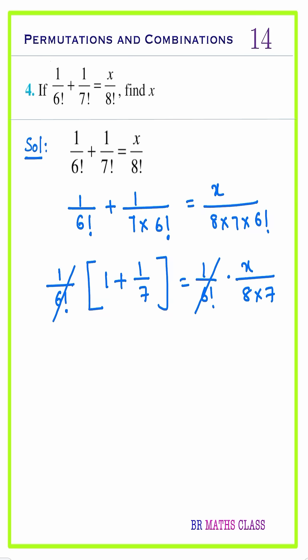Now you see this 1 by 6 factorial - 1 by 6 factorial will get cancelled. If I simplify this, what I will get: 8 by 7 equals x divided by 8 into 7. The 7, 7 will get cancelled. What is x from this? 8, 8, 64.